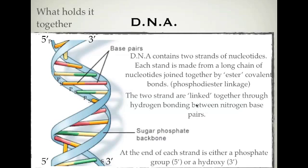I'll talk about the hydrogen bonding a bit more. You can see here we have a nitrogen base on each strand — what holds these two together is hydrogen bonding. The reason you get this double helix, or the reason these two strands are always together, is due to hydrogen bonding between nitrogen base pairs. At each end of a strand is either a phosphate group, denoted as 5, or a hydroxy group, denoted as 3.